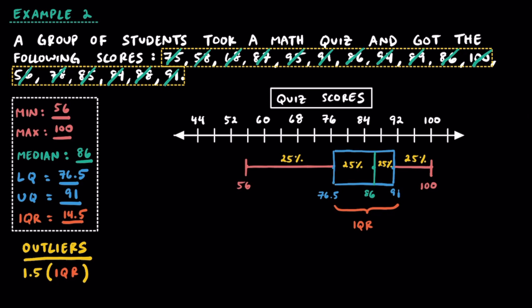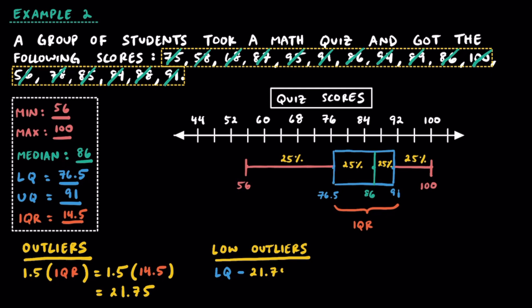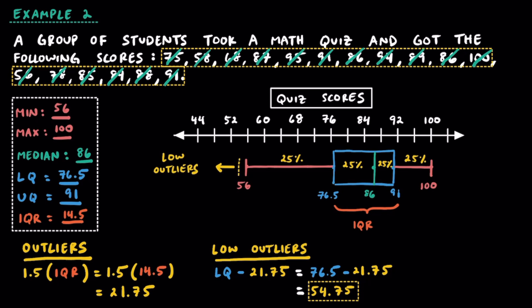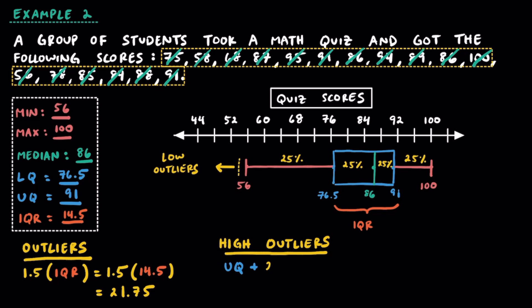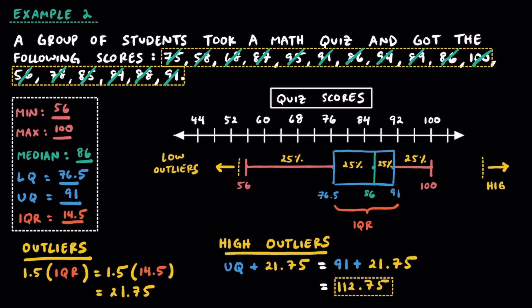Now let's check for outliers. That formula is going to be 1.5 times the IQR, or 1.5 times 14.5, which equals 21.75. To check for outliers on the low end, we take the lower quartile and subtract 21.75: 76.5 minus 21.75 equals 54.75. If someone scored below 54.75, they would be considered an outlier. Since the lowest score was a 56, we don't have any outliers on the low end. To calculate outliers on the high end, we take the upper quartile and add 21.75: 91 plus 21.75 equals 112.75. If someone scored above 112.75, that would be an outlier on the high end. In this particular dataset, we don't have any outliers on the high or the low end.